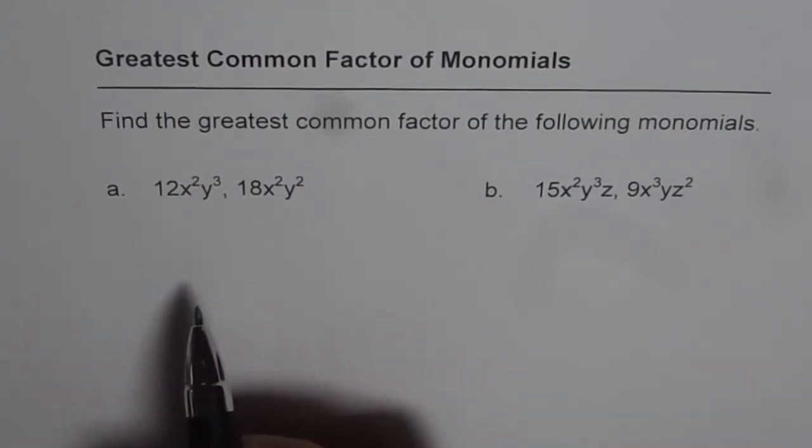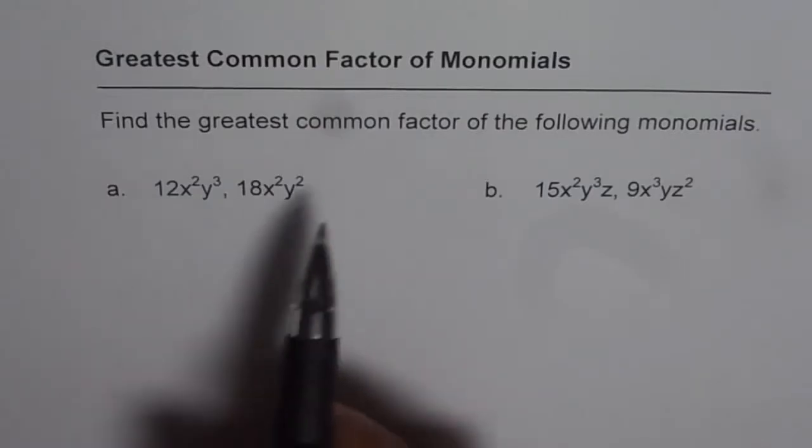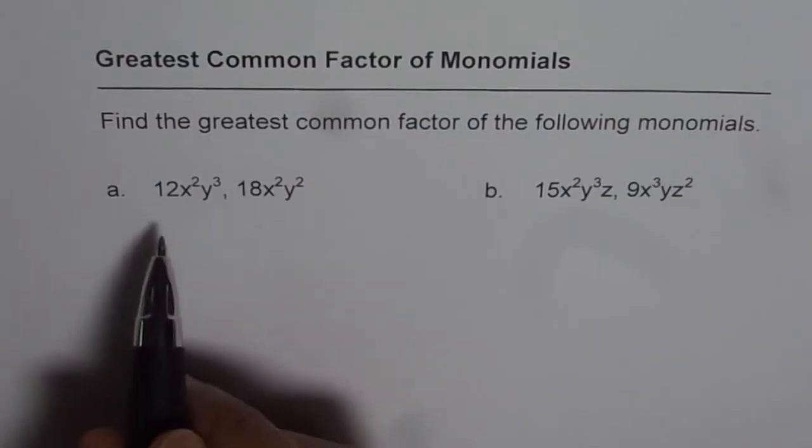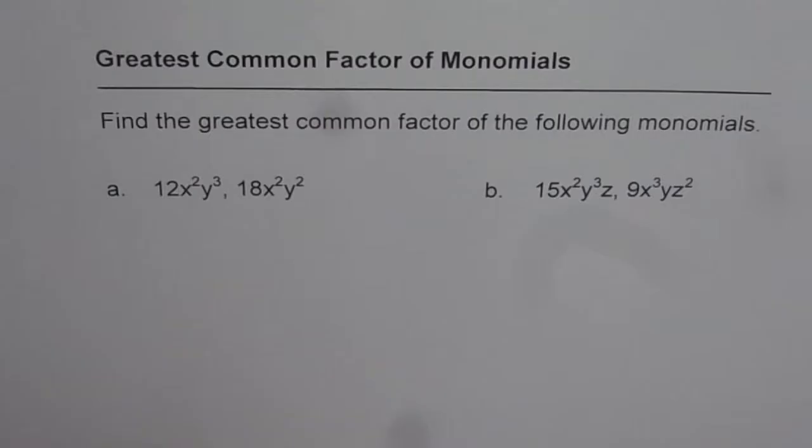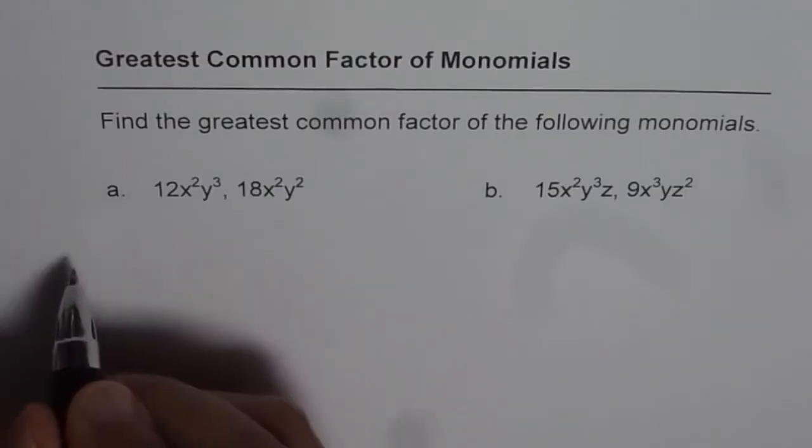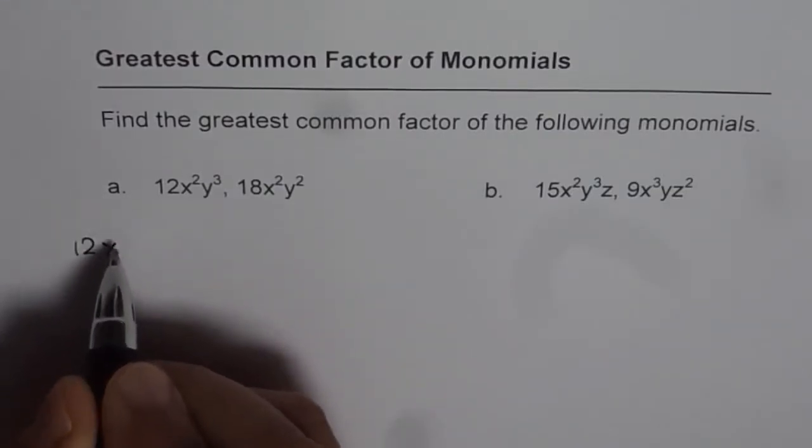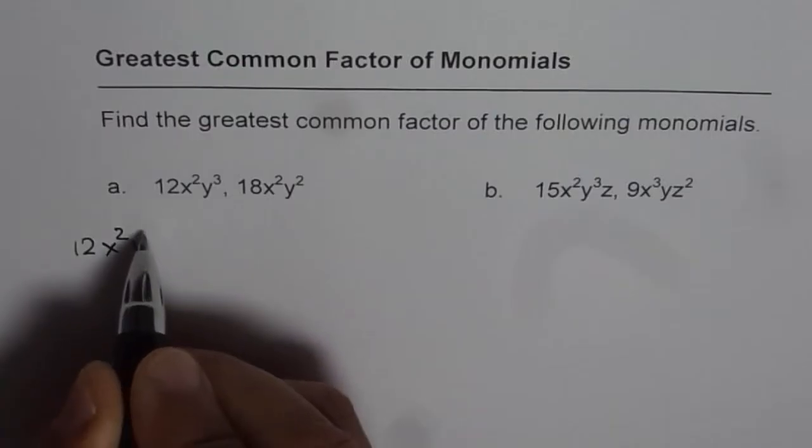So let's start with the first one and find the common factors. Strategy to find common factors for monomials is similar to what we do in numbers. So let's begin with 12x²y³.